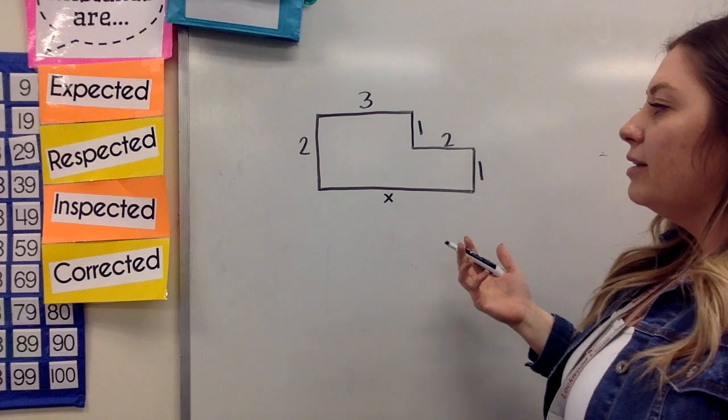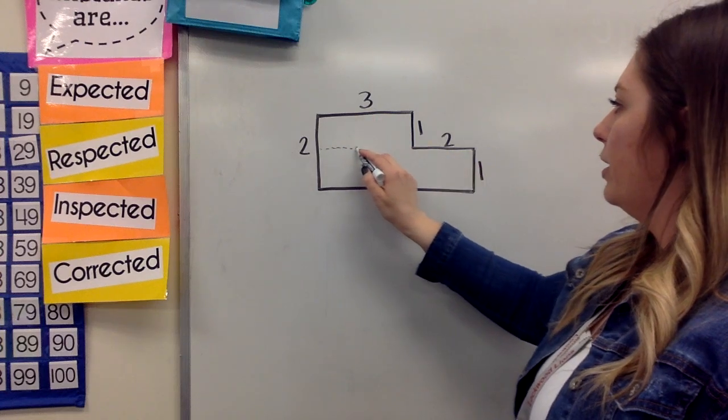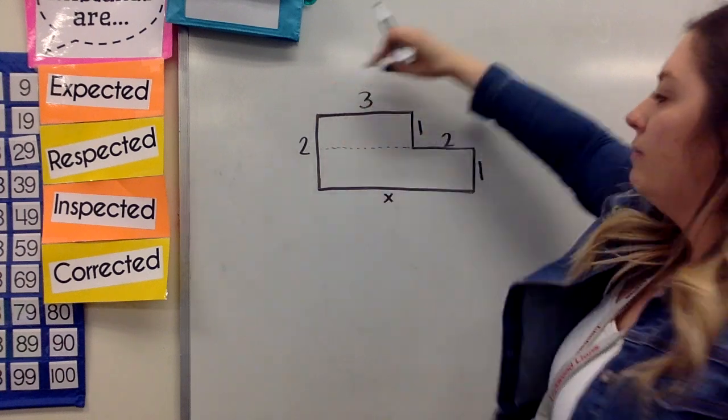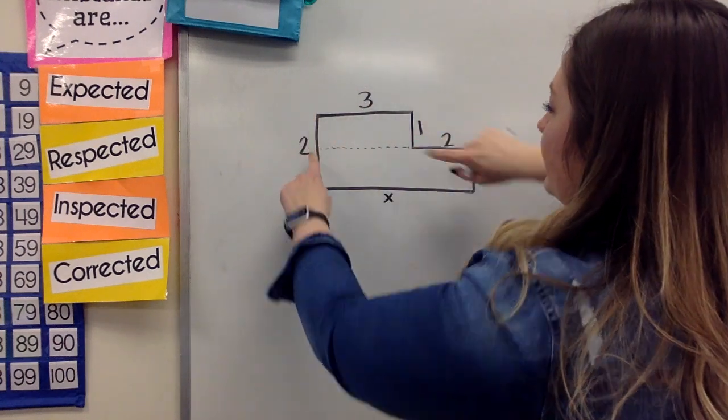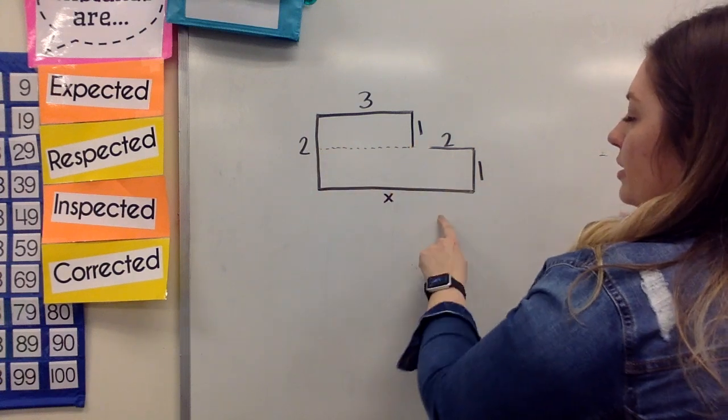And I'm going to look at this as if this side was dropped down right here. Because if I take this length and just drop it down, it makes this side length the same as how long this one is.